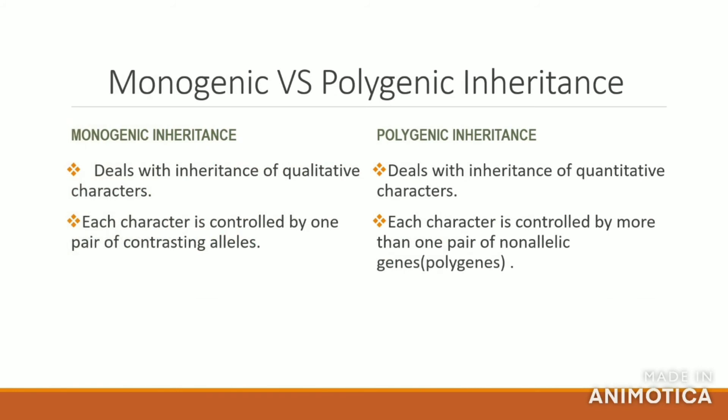To sum up, let's discuss the difference between monogenic and polygenic inheritance. Monogenic inheritance deals with qualitative characters and is controlled by one pair of contrasting alleles, whereas polygenic inheritance deals with quantitative characters which are controlled by more than one pair